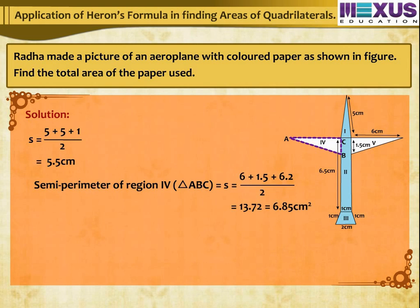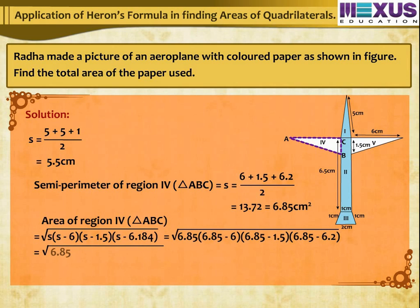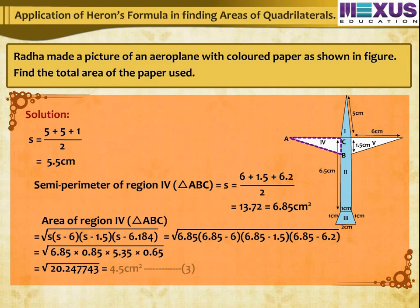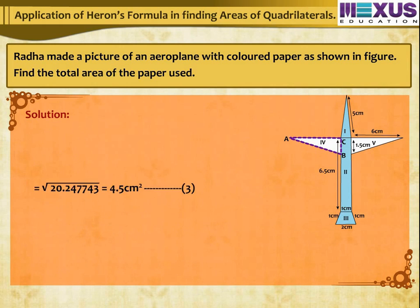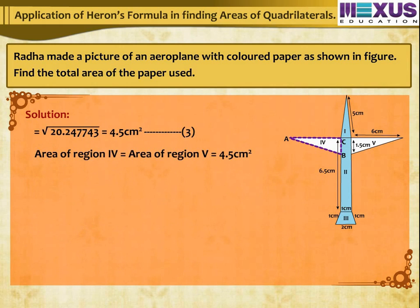Using Heron's formula, area of triangle = √(6.85 × 0.85 × 5.35 × 0.65) = √20.2477 ≈ 4.5 cm². Area of region 4 = area of region 5 = 4.5 cm².